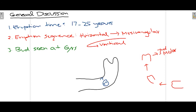At six years of age you can see the bud of the third molar, confirming whether it is present or not, because in some cases it can be absent congenitally as well. Now talking about eruption sequence — this basically means how the third molar takes its respective position in the oral cavity.